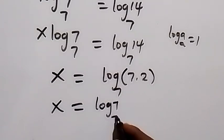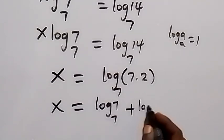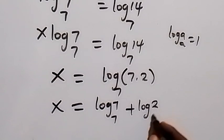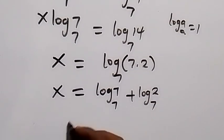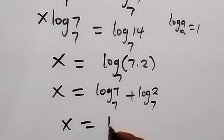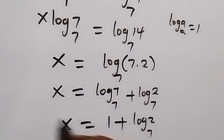Log base 7 of 7 is 1, so therefore x is now equals to 1 plus log base 7 of 2, which is similar to what we got earlier.